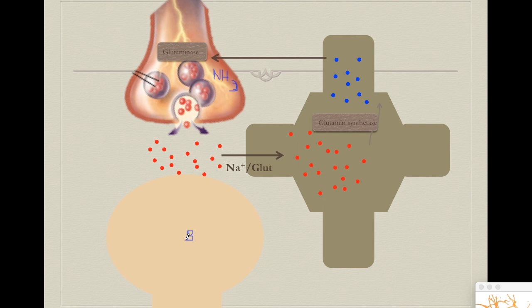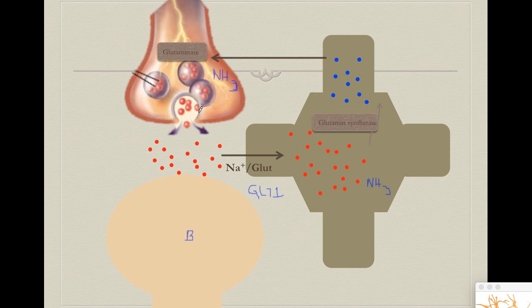After activating neuron B, glutamate gets recaptured into astrocytes through the transporter called GLT1. Once in the astrocytes, a second amino group from ammonia is added, generating glutamine. Glutamine is innocuous — it can't activate neurons — so it gets released and retaken by the first neuron, which removes the amino group and adheres it to a new glucose molecule.